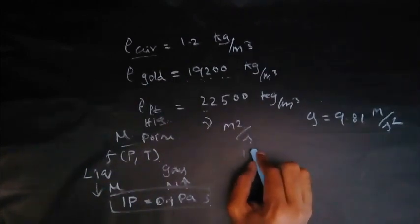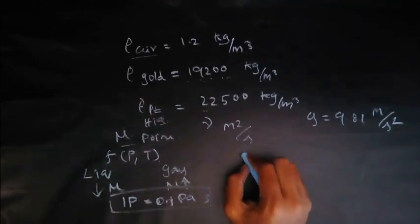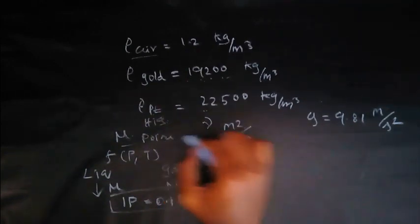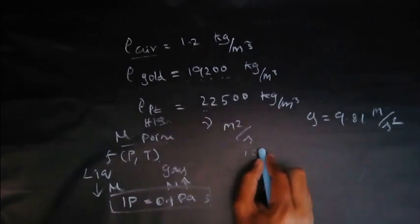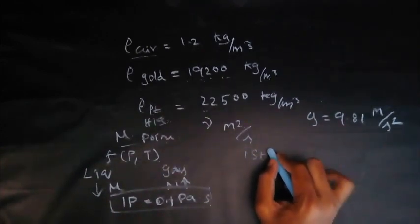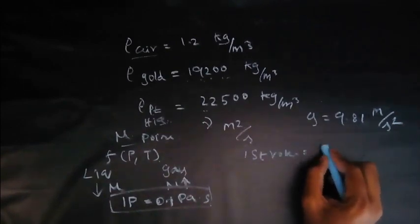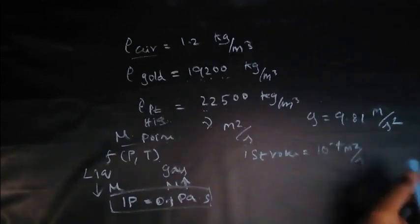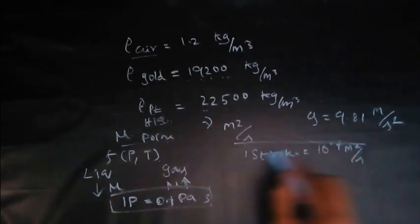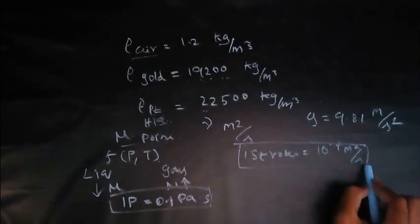Also, it can be written in stokes. Like poise, here we can also have stokes. So one stoke is equal to 10 to the minus 4 meter square per second. So it will be better if you make note of this.